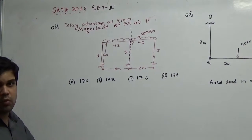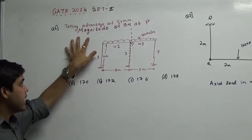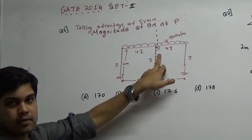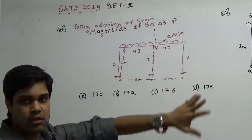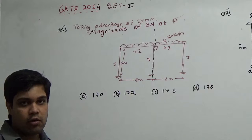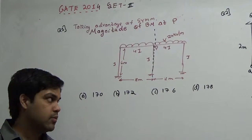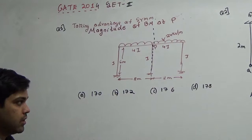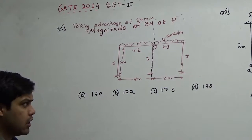The very first problem was on moment distribution itself. Actually the question said that taking the advantage of symmetry, the magnitude of bending moment at P is, in bracket it was written to solve preferably by moment distribution. Actually the best method right now is moment distribution method and I am giving you the concepts in the video lectures. Here I am going to tell you about the concept of symmetry.